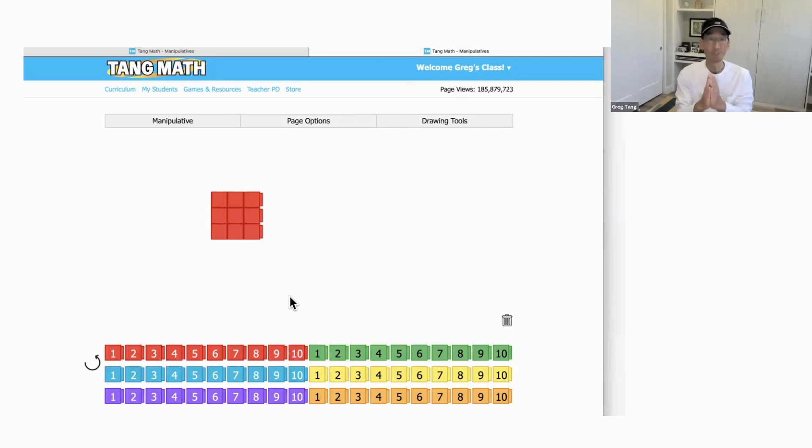The key to fractions is what? Unit fractions. Halves, thirds, fourths. What's the key to decimals? Again, units, place value. Decimals are not different from fractions. It's a different notation. It's a different way to represent a decimal fraction.